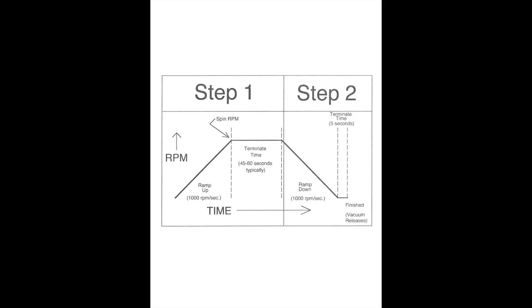Each step has just three things you will be entering: speed, ramp, and terminate time. In a typical two-step recipe, the first step will include the speed which you want to get to, the acceleration rate to get to that speed entered in RPMs per second, and then the length of time that you want it to hold at that speed.